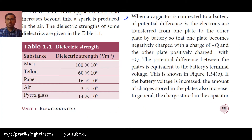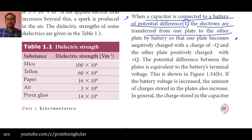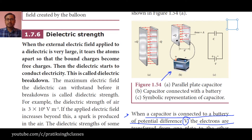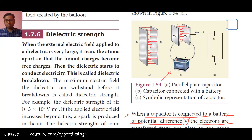Coming to the theory: when a capacitor is connected to a battery of potential V — as seen in figure 1.54B — electrons are transferred from one plate to the other by the battery. The negative terminal of the battery is connected to one plate and the positive terminal to the other. Because of this, the charges flow from the battery to the capacitor. The plate connected to the negative terminal becomes negatively charged with charge −Q.